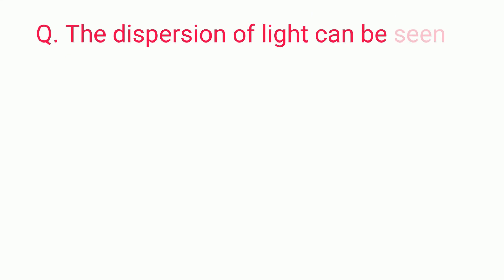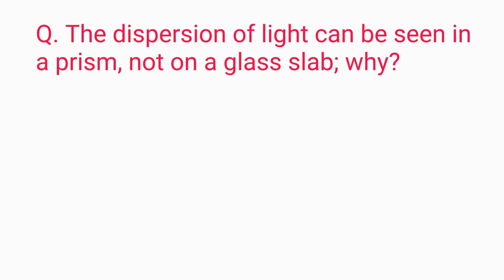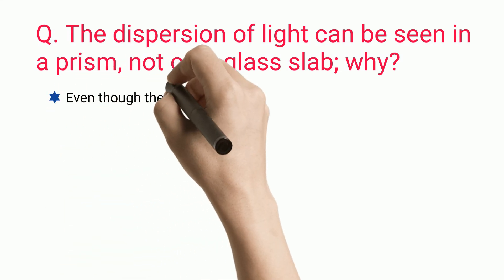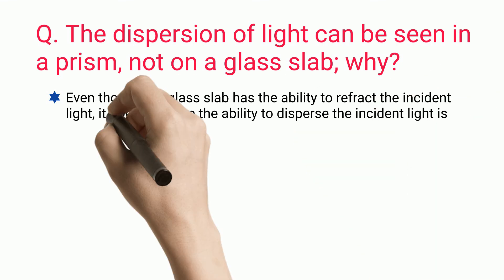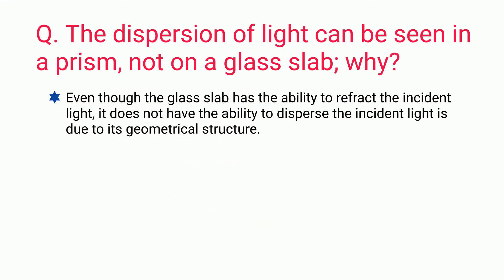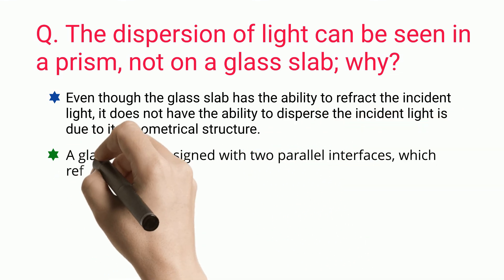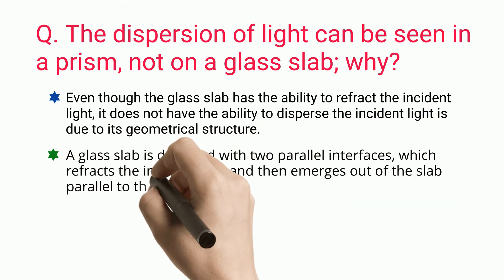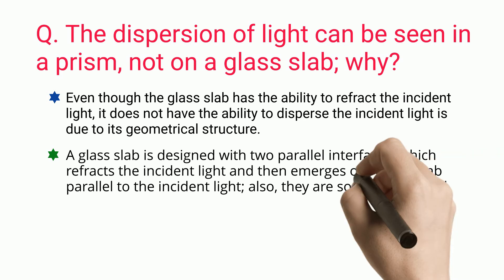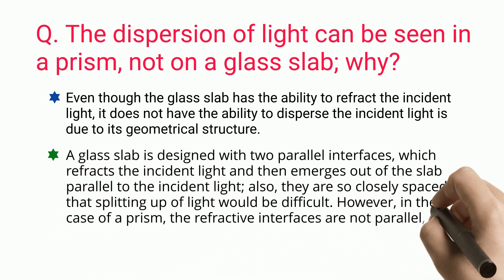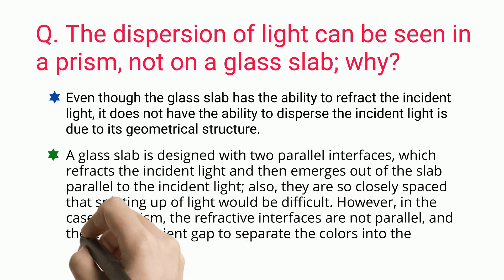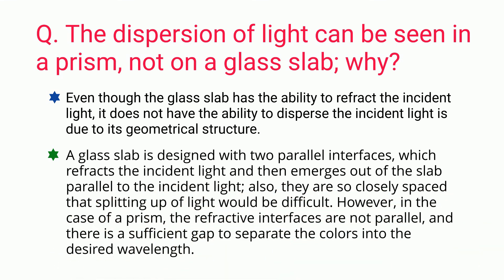Why is dispersion seen in a prism but not a glass slab? Even though a glass slab can refract incident light, it cannot disperse it due to its geometrical structure. A glass slab has two parallel interfaces that refract the incident light and it emerges parallel to the incident light; they are so closely spaced that splitting of light is difficult. In a prism, the refractive interfaces are not parallel and there is sufficient gap to separate the colors into the desired wavelengths.